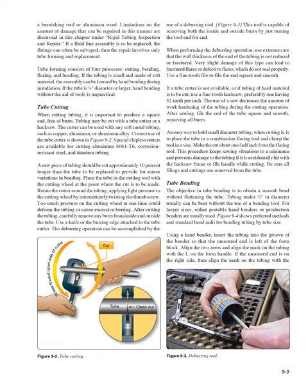After cutting the tubing, carefully remove any burrs from inside and outside the tube. Use a knife or the burring edge attached to the tube cutter. The deburring operation can be accomplished by the use of a deburring tool (Figure 9-3), which is capable of removing both the inside and outside burrs by just turning the tool end for end. When performing the deburring operation, use extreme care that the wall thickness of the end of the tubing is not reduced or fractured. Very slight damage of this type can lead to fractured flares or defective flares, which do not seal properly. Use a fine-toothed file to file the end square and smooth. If a tube cutter is not available, or if tubing of hard material is to be cut, use a fine-tooth hacksaw, preferably one having 32 teeth per inch. After sawing, file the end of the tube square and smooth, removing all burrs.